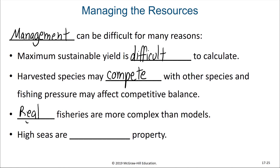Another difficulty is that the high seas are common property. Rules and regulations of one country that fishermen might follow may not necessarily prevent fishermen from other countries from collecting from that common area and thereby depleting the stocks. Another difficulty is that fisheries often under-report how much they've collected, so if managers are trying to figure out the population size and its ability to rebuild, their estimations are only as good as the data that they use.